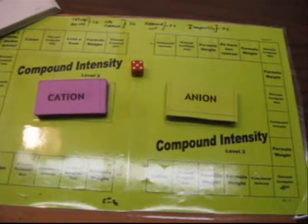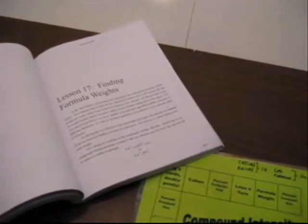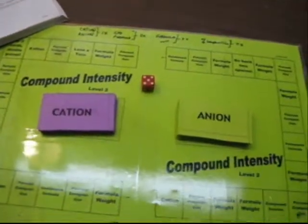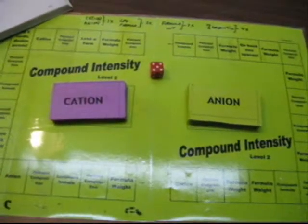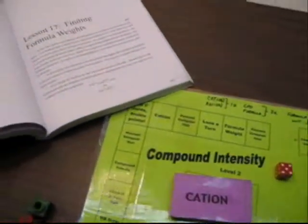This is the compound intensity game which goes along with Lesson 17 and Lesson 18 in your friendly chemistry textbook. The compound intensity game has two levels, Level 1 and Level 2.